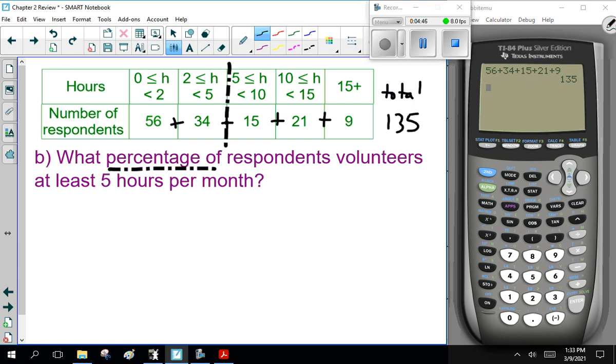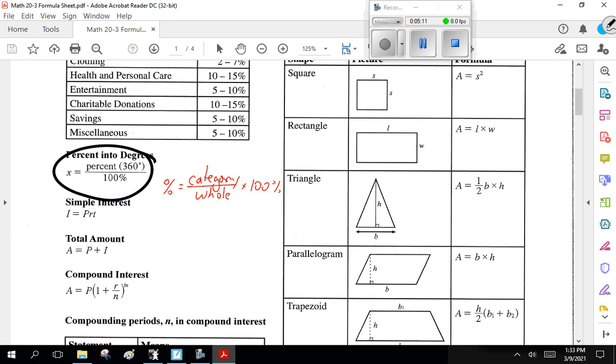Now why do I need the total? Well, here, how many volunteer at least 5 hours per week? Well, that's everything above this, which is 15 plus 21 plus 9, which is 45 students. That percent is your category divided by total times 100%. How do I know that? Because that's on the sheet. Yeah, this formula is here on the formula sheet. Category divided by whole times 100%. That's the effect of the percent.